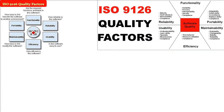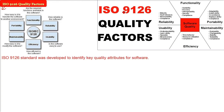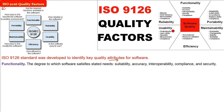ISO IEC 9126 quality factors. ISO stands for International Organization for Standardization. This standard was developed to identify the key quality factors, attributes, and features for a software. They divided these into major parts, each dependent on certain factors. Models like FURPS and McCall are all about showing, representing, and defining the quality of software.